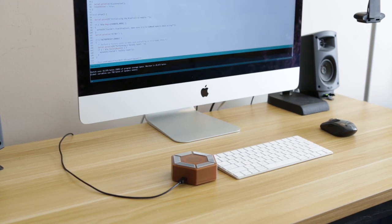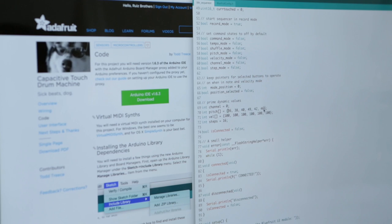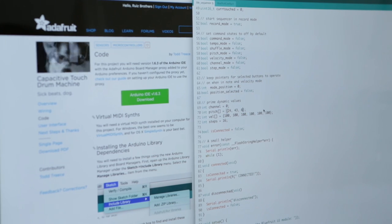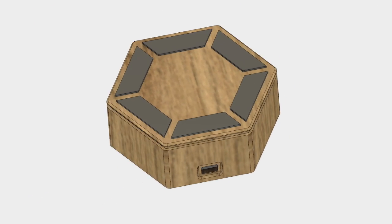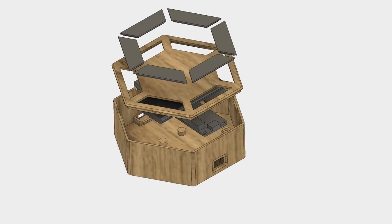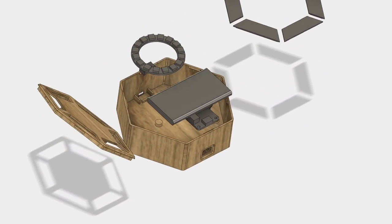The code used in this project was written by Todd Treece. His example sketch is bundled with the 15-step Arduino library. It's easy to modify the code so you can add more pads or change up the MIDI notes and tempo. To house the electronics, I designed an enclosure and modeled each component using Fusion 360.